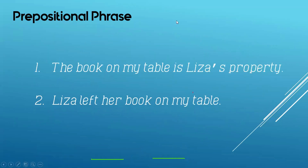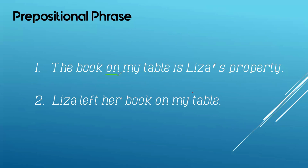To identify a prepositional phrase, you have to look for the preposition. For number one: 'The book on my table is Lisa's property.' The preposition here is on. The object of on is table, and in between we have the modifier — the possessive adjective my. So, on my table is your prepositional phrase, because you have the preposition and its object.